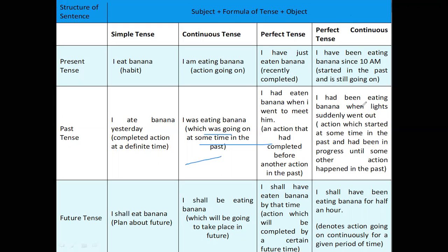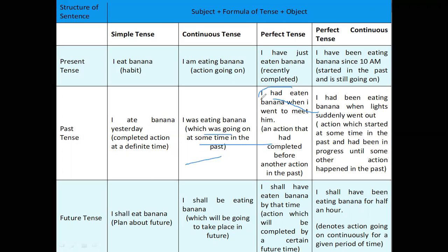Past perfect continuous tense: 'I had been eating banana when lights suddenly went off.' This indicates an action which started at some time in the past and had been in progress until some other action happened. The difference is: in past perfect tense the action of eating banana completed before meeting him, whereas in past perfect continuous tense the action of eating banana was continuing when the lights went off.